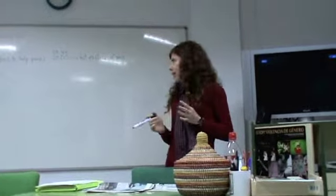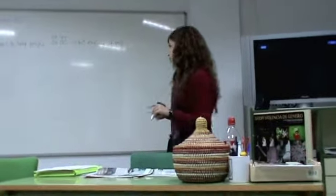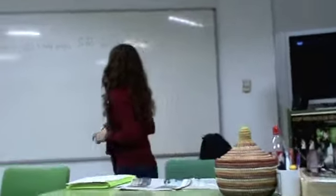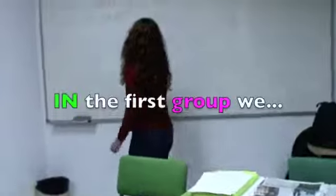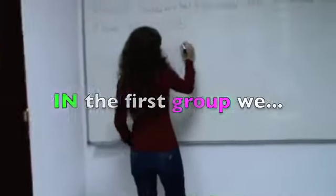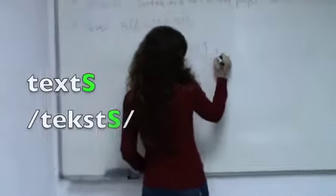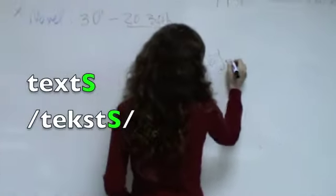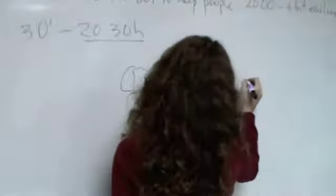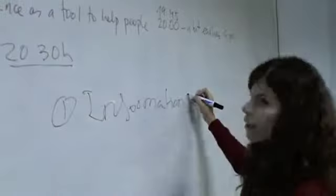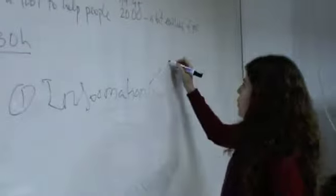I'm going to tell you about the different types of text that we can find in newspapers. You can divide them into three groups. On the first group, we have the information texts.